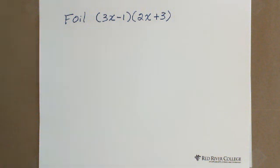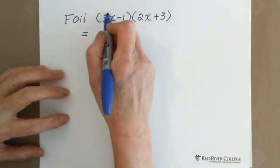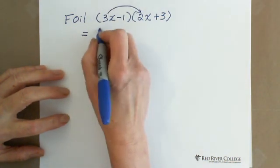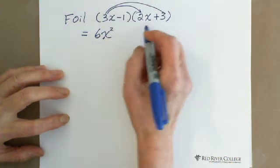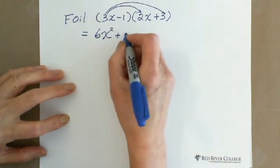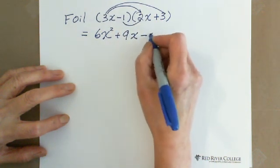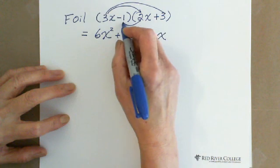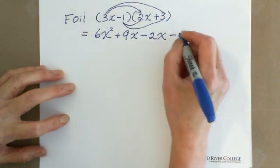This question is for FOIL: multiply (3x minus 1) by (2x plus 3) — that's expanding. When we do FOIL, we multiply first term by first term to get 6x squared, then multiply 3x by positive 3 to get 9x, then multiply negative 1 by 2x to get minus 2x, then multiply negative 1 by 3 to get negative 3.